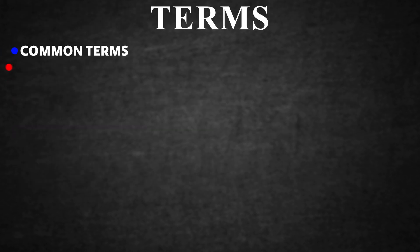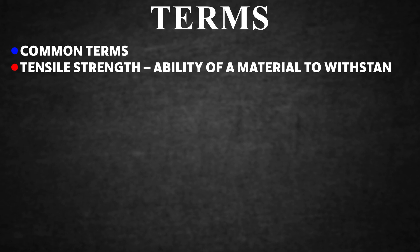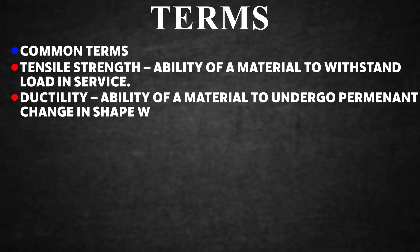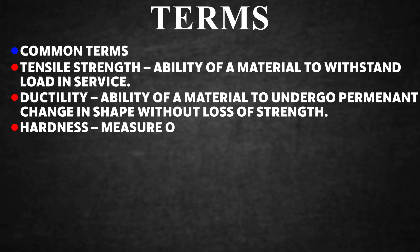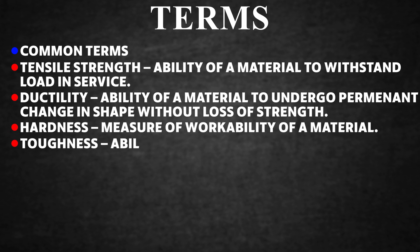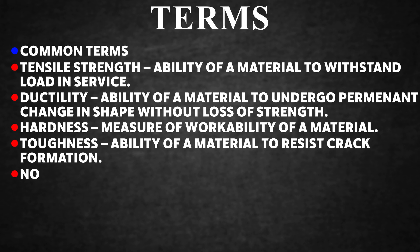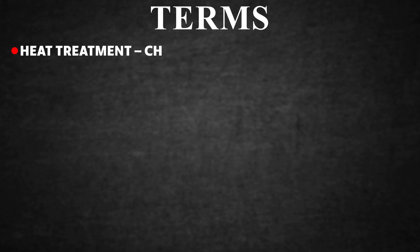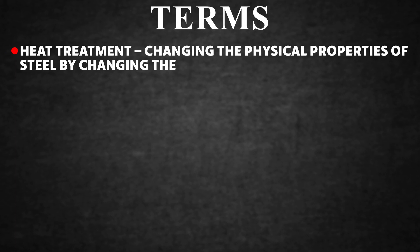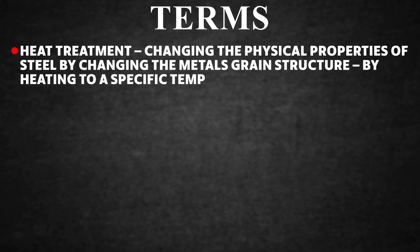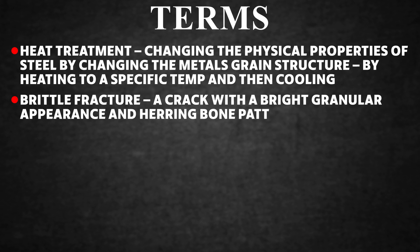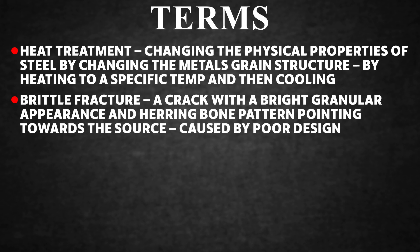Common Terms. Tensile strength: ability of a material to withstand load in service. Ductility: ability to undergo permanent change in shape without loss of strength. Hardness: measure of workability of a material. Toughness: ability to resist crack formation. Notch toughness: the ability to resist the spreading of a crack. Heat treatment: changing the physical properties of steel by altering the metal's grain structure through heating to a specific temperature and then cooling. Brittle fracture: a crack with a bright granular appearance and herringbone pattern pointing towards the source, caused by poor design or fabrication.